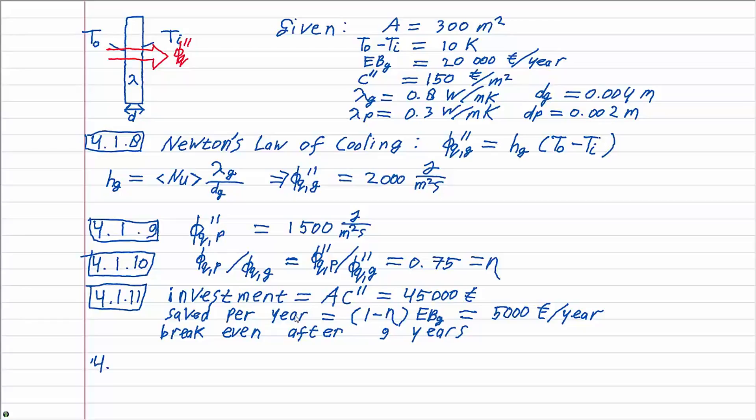For the last question in this exercise the thickness of the plastic windows changes from 2 millimeters to 3 millimeters. The calculations however stay the same. So the heat flux will become 1000 joules per meter squared second, the ratio ETA becomes a half, and continuing down this route we end up with a break even point after four and a half years.